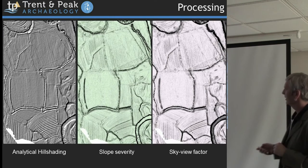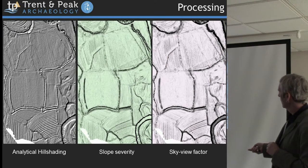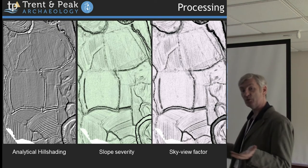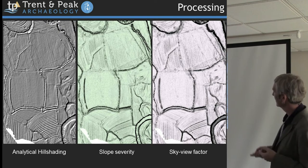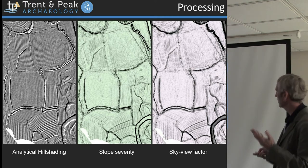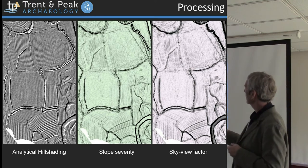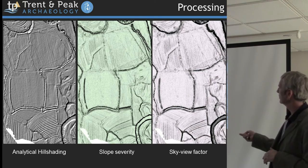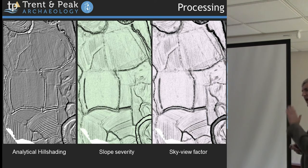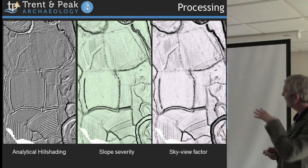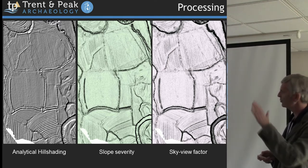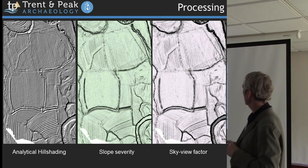Slope severity effectively applies shading to how steep the slope is — really steep slopes are dark, flat areas are light. In less high-relief landscapes you don't necessarily get as good a representation of the pattern. But in landscapes of high relief, where you get breaks of slope — even slight breaks of slope — they show up well.